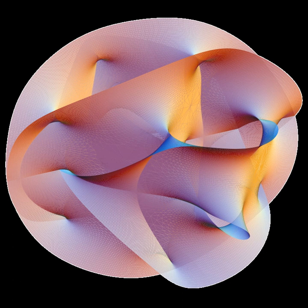Heterotic string theory was first developed in 1985 by David Gross, Jeffrey Harvey, Emile Martinek, and Ryan Rome in one of the key papers that fueled the first superstring revolution.